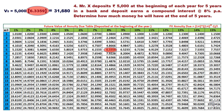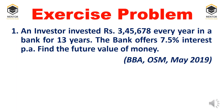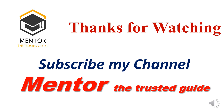Please like, share, and subscribe to my channel. Here is the exercise problem: an amount of 45,678 is invested every year in a bank for 30 years. Since beginning or end is not specified, we consider it as beginning of the year. The bank offers 7.5% interest per annum — find the future value. This is a university exam question. Apply the uniform annuity due formula to solve it; I will provide the answer in the description box. Thanks for watching — do subscribe to Mentor, the trusted guide.